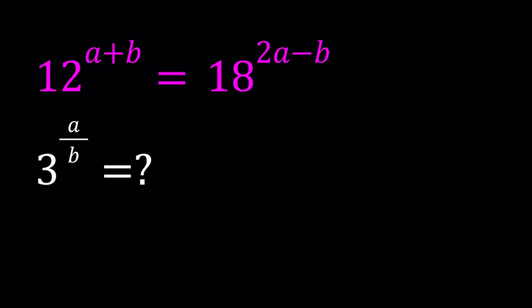Let's get started. We have 12 to the power a plus b equals 18 to the power 2a minus b, and we're going to evaluate 3 to the power a over b. I'll be presenting two methods, and let's start with the second one this time.